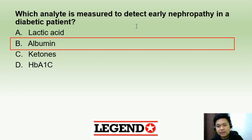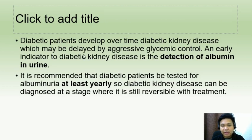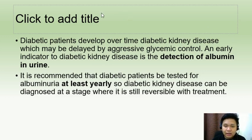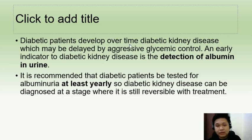Which analyte is measured to detect early nephropathy in a diabetic patient? The answer is albumin in the urine. Diabetic patients develop diabetic kidney disease over time, which may be delayed by aggressive glycemic control. An early indicator of diabetic kidney disease is albuminuria, and it is recommended that diabetic patients be tested for albuminuria at least yearly.